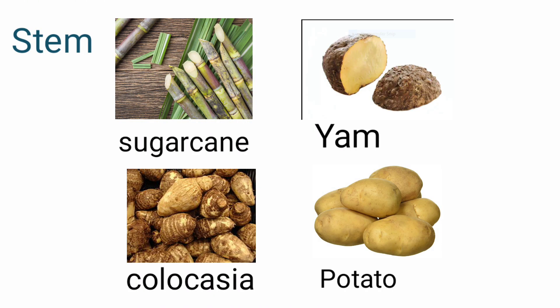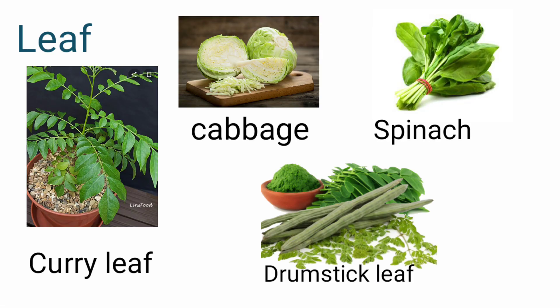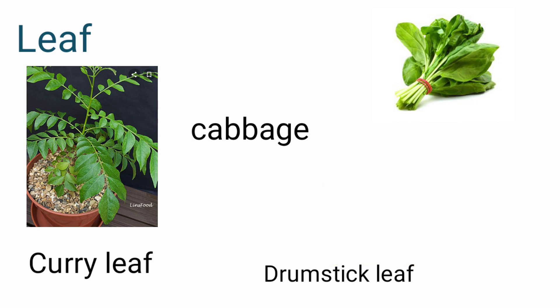Sugar cane, potato, kolakashya — we use the stem as the edible part. Spinach, cabbage, curry leaf, moringa — we use the leaf as the edible part.